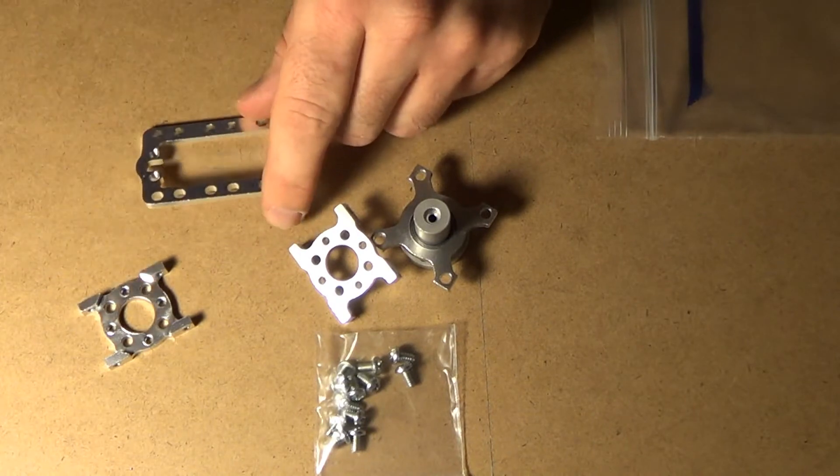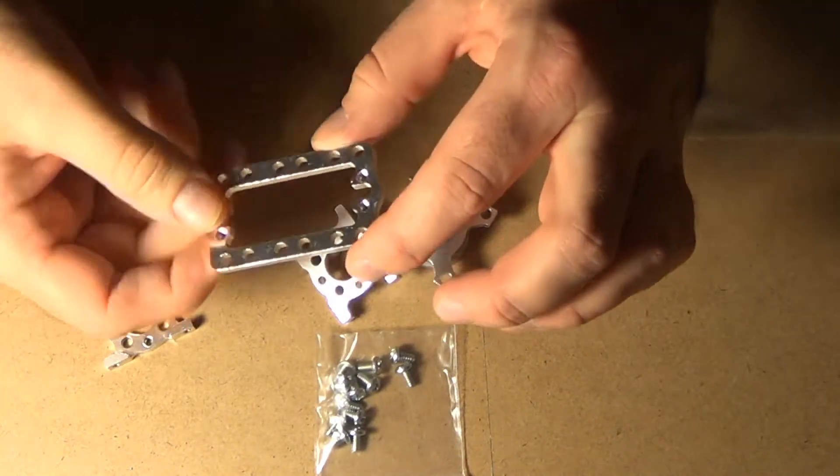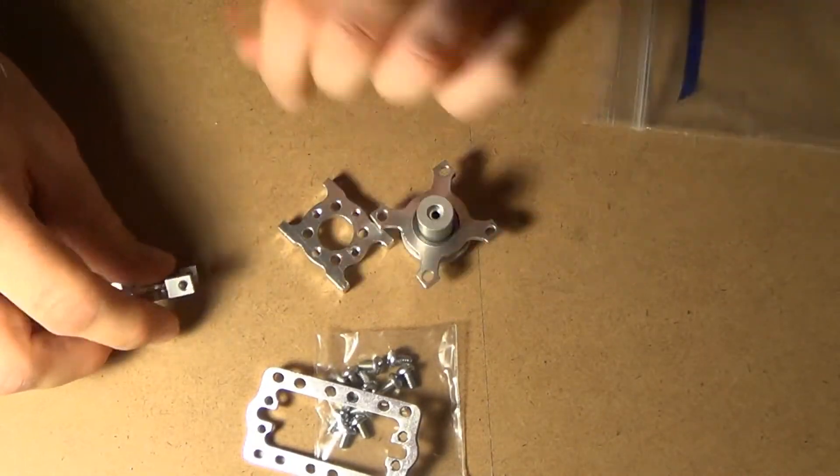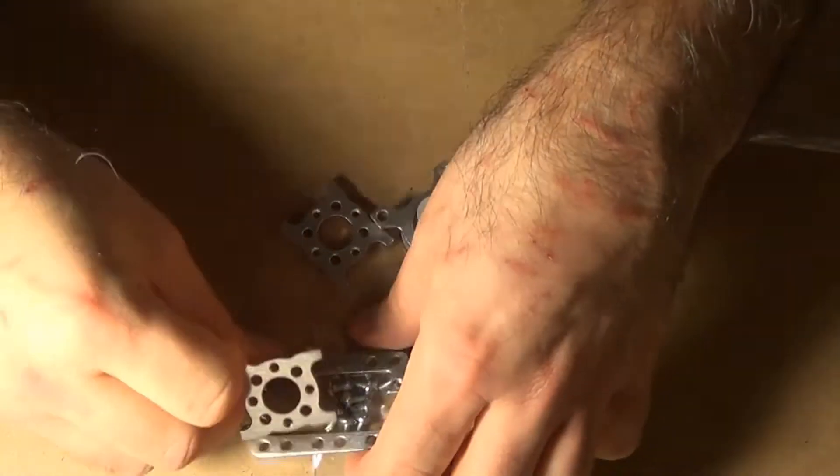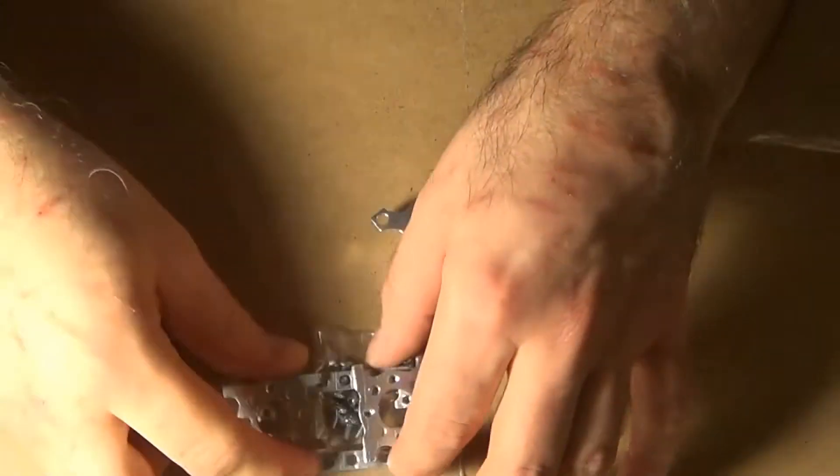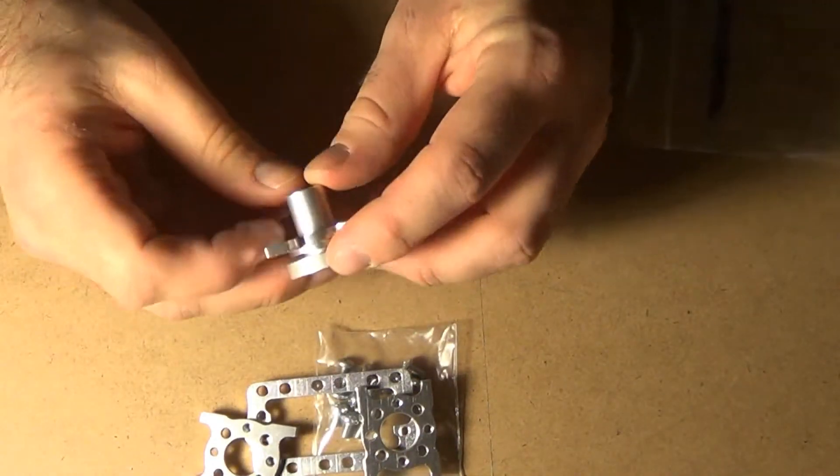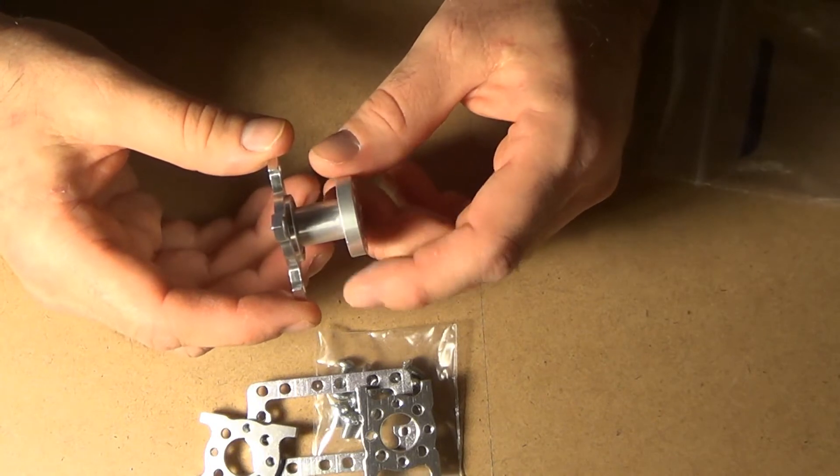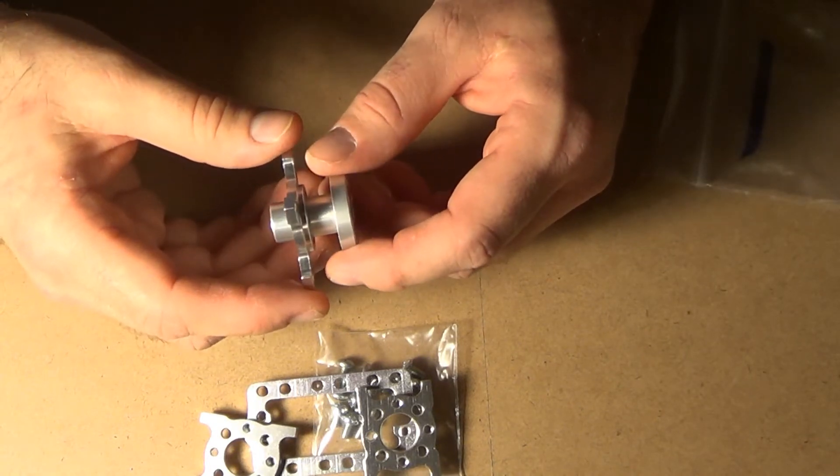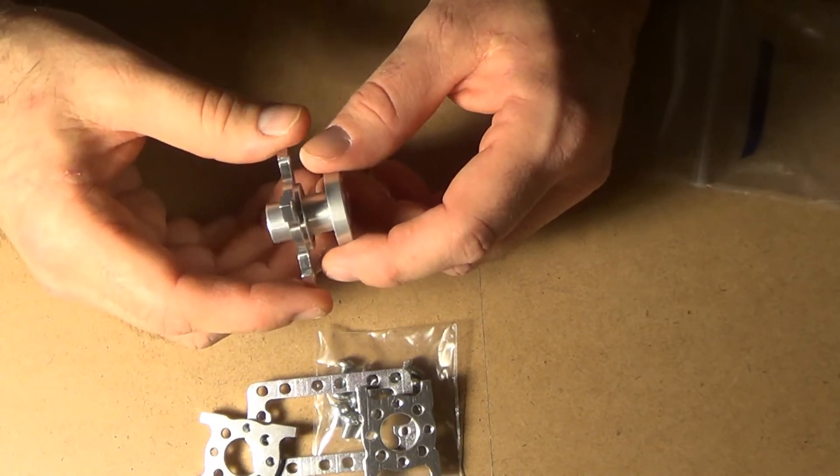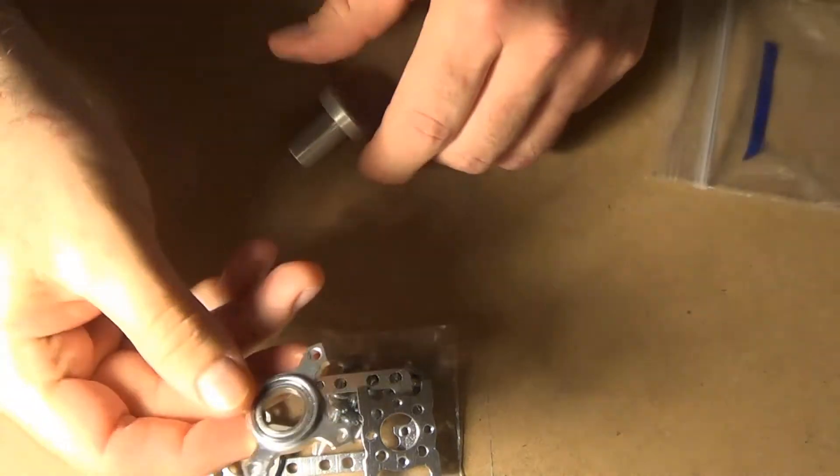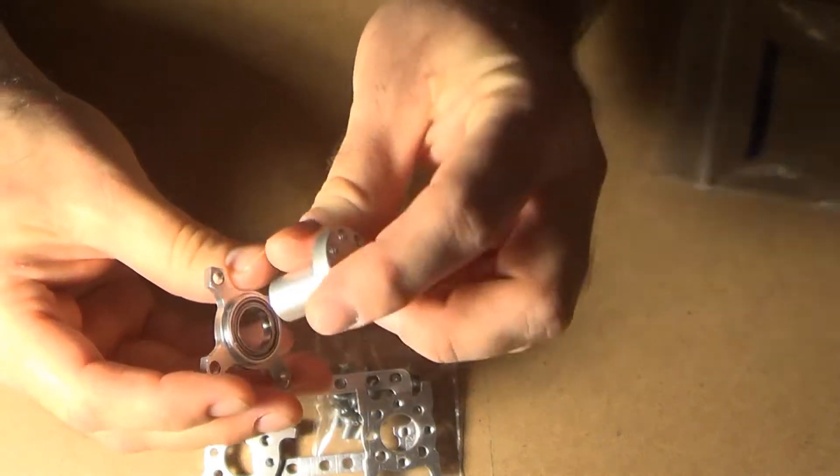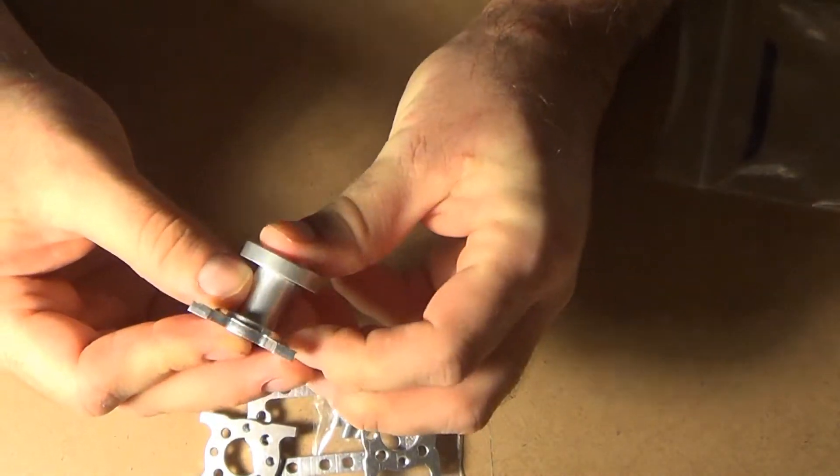You have a servo plate which is what the servo is mostly mounted to. Then you have hub plates which are mounted to the servo plate. And then you have this thing which is probably the nicest part of it which is a ball bearing plate. So there's a nice little ball bearing in here.